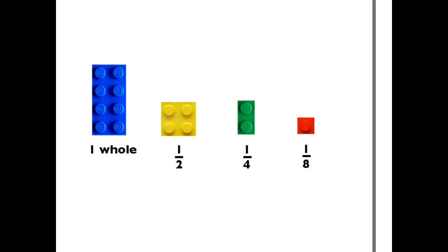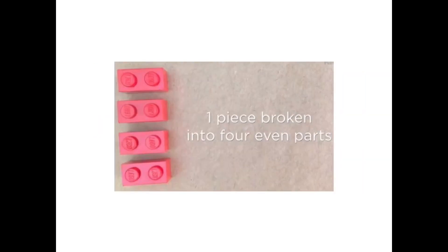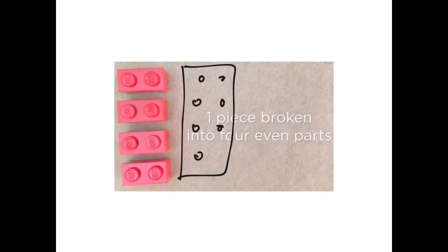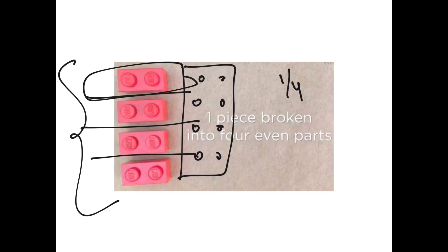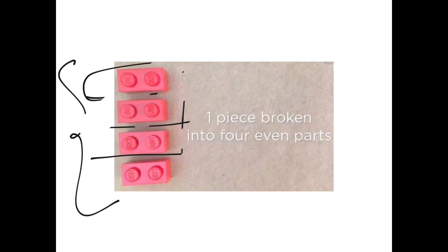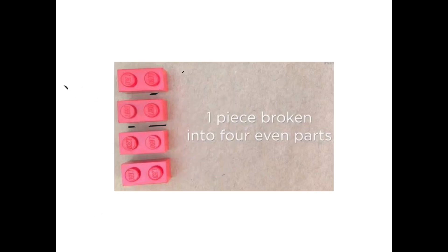So for explaining — if you have to take a full block like we had, wherein we have 1, 2, 3, 4, 5, 6, 7, 8. One piece is broken into four even parts: one part, two parts, three and four. And this is which fraction? This is 1/4, because one part of four parts. That is why it is very clearly shown that one piece broken into four even parts is 1/4.